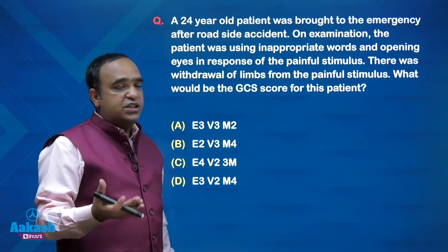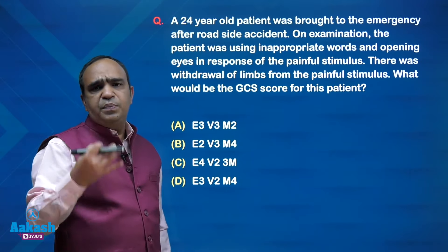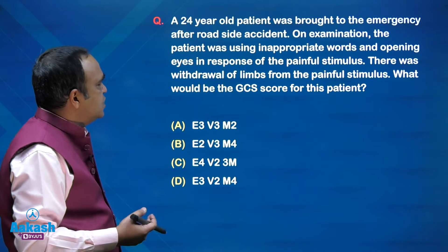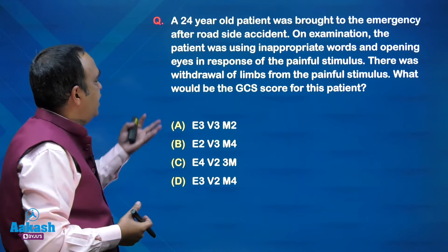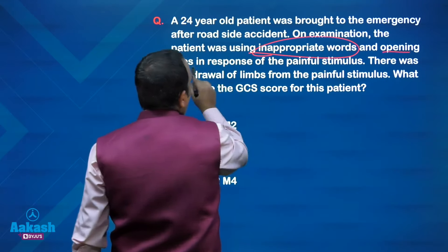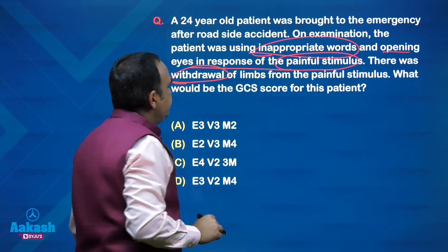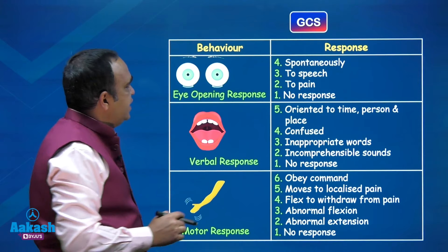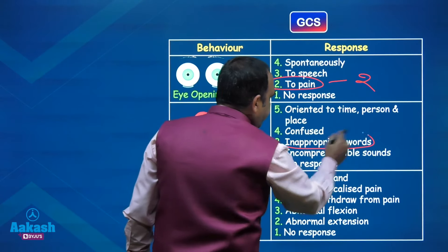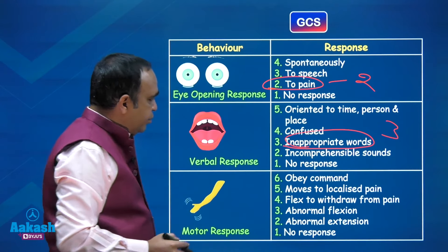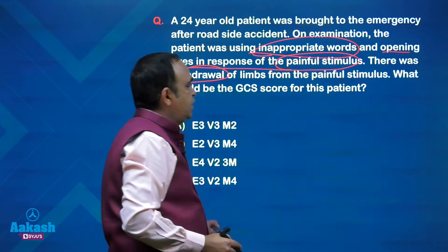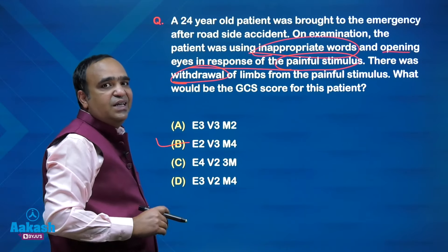Straightforward GCS calculation — Glasgow Coma Score, repeatedly taught. The examiner gives eye response, verbal response, and motor response; you fit them into the GCS table. For the given question: eye response to painful stimulus is 2, verbal response of inappropriate words is 3, and motor response of withdrawal from pain is 4. So the answer is E2, V3, M4.